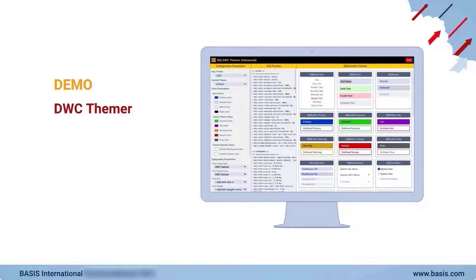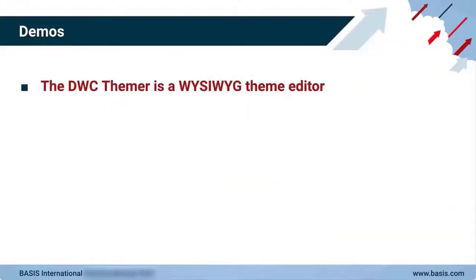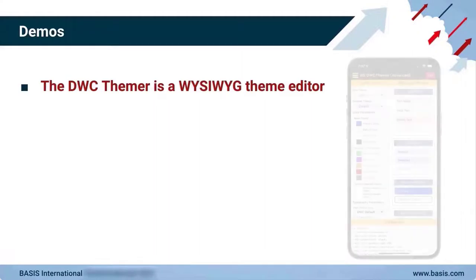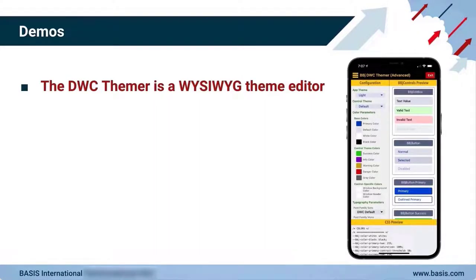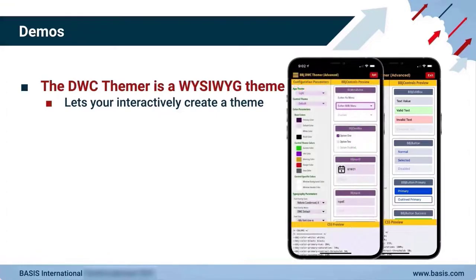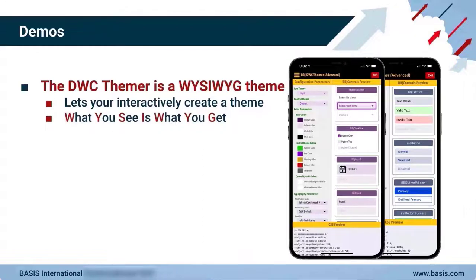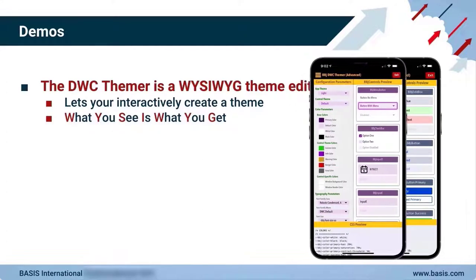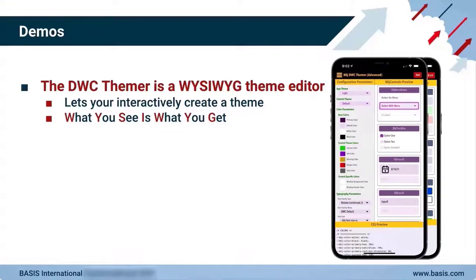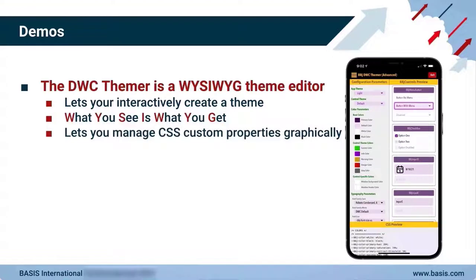Next, let's look at the DWC Themer app, which is a WYSIWYG theme editor BBJ program running in the new client. A theme editor acts as a visual assistant that allows users to create or modify a theme that they can subsequently apply to their applications in order to customize its look and feel. The WYSIWYG portion stands for what you see is what you get, meaning that you can see how your changes affect BBJ controls in real time. You can think of the DWC Themer app as an easy way to manage many of the BBJ CSS custom properties in a graphical manner.